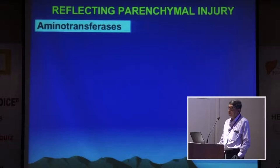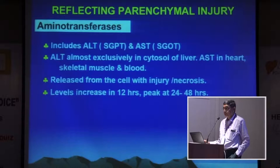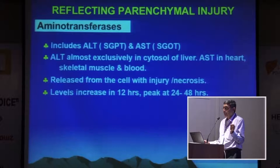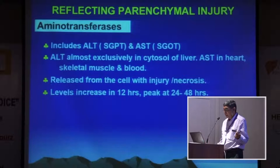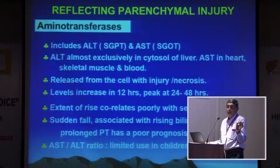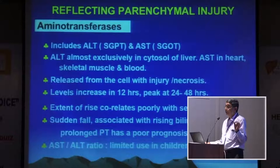I will first go through the tests one by one before we look at the patterns. Aminotransferases — ALT and AST; we don't use the terms SGPT and SGOT now. ALT is almost exclusively in the cytosol of the liver, but AST is also present in the heart, skeletal muscle, and blood, so ALT is more hepatospecific than AST. They are released from hepatocytes when the cell is injured or necrosed. Levels increase within 12 hours of acute hepatocyte injury, peak at 24 to 48 hours, then decline. The extent of rise does not correlate with severity of disease — an ALT of 5000 doesn't mean very poor prognosis; it only tells you that a large number of hepatocytes have been suddenly damaged. It has no prognostic significance.